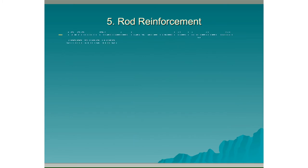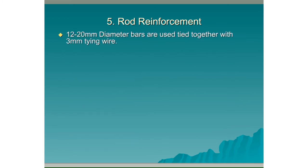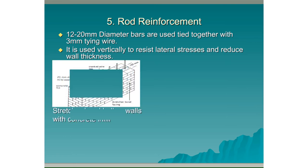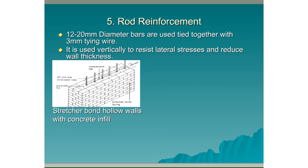Rod reinforcement: 12–20mm diameter bars are used, tied together with 3mm tying wire. It is used vertically to resist lateral stresses and reduce wall thicknesses. Some of the bonds that accommodate rod reinforcement can be seen below. First we have stretcher bond with hollow walls with concrete fill, where a gap in the centre of the wall accommodates the rod reinforcement plus some concrete fill.